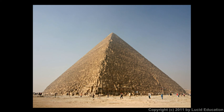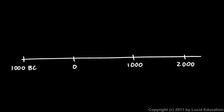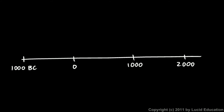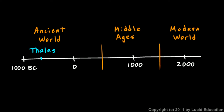Let's put this in its historical context. If we draw a timeline, with 1000 BC back here and the present day up here, and divide history into three broad time periods — the ancient world, the middle ages from roughly 400–500 AD up to 1500 AD, and the modern world — Thales was a thinker in the ancient world, around 600 BC. He's considered one of the first Western thinkers, one of the first Western philosophers.